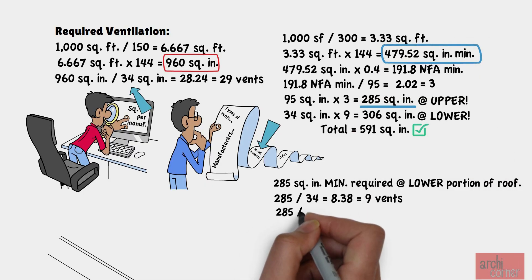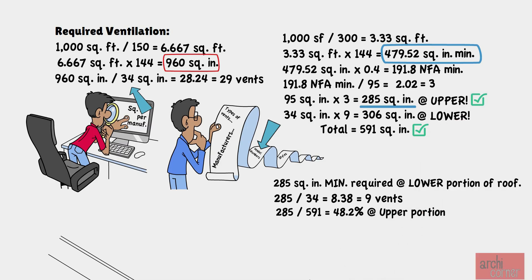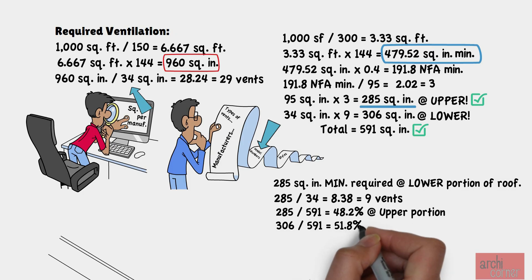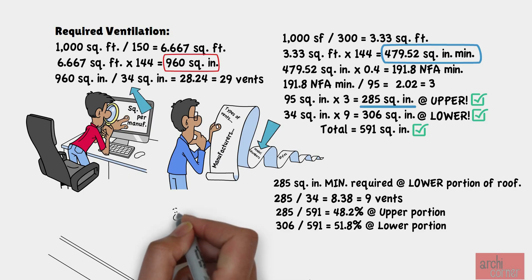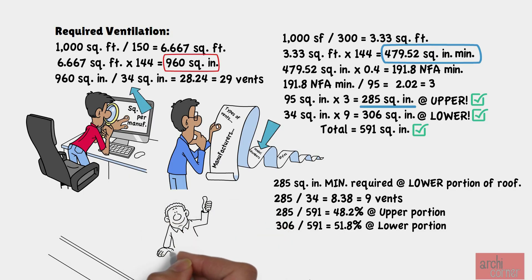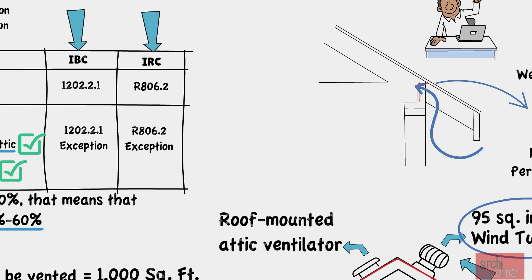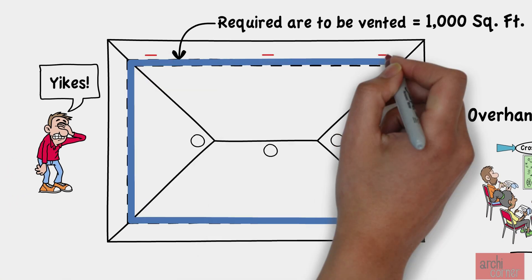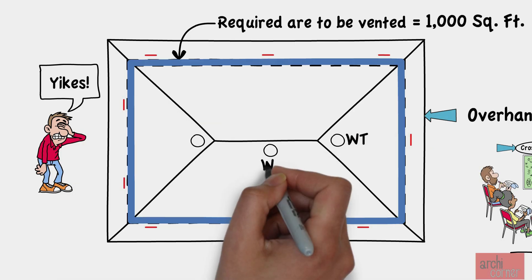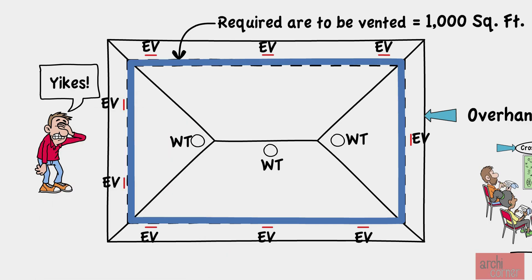This meets the minimum requirements. We confirmed that 48.2% of venting is provided on the upper portion with wind turbines and 51.8% in the lower portion with eave vents, keeping the upper venting between 40% and 50% as required. On the roof plan, we place three wind turbines on top and nine under-eave vents around the building, spreading them out to allow for cross ventilation.